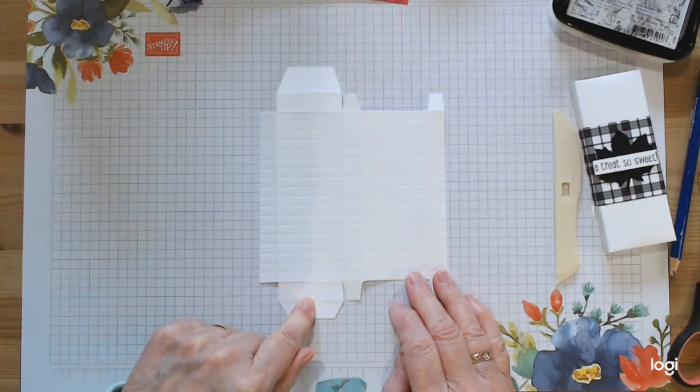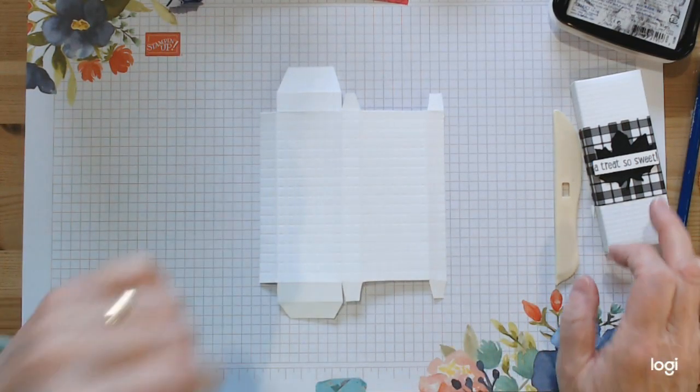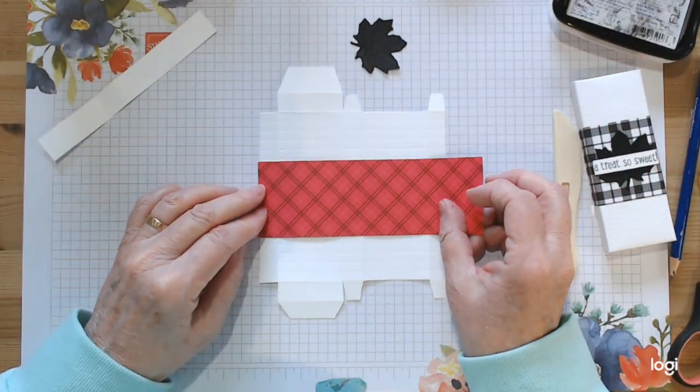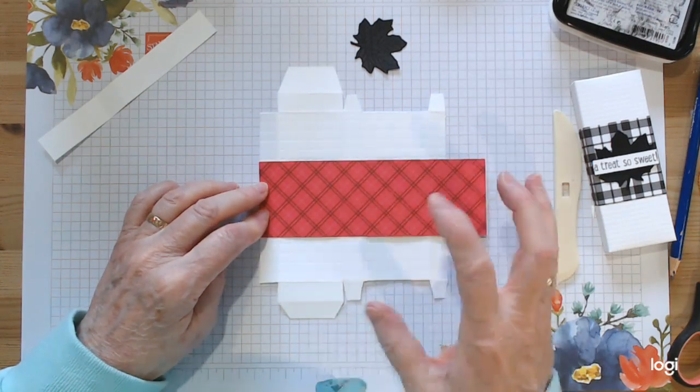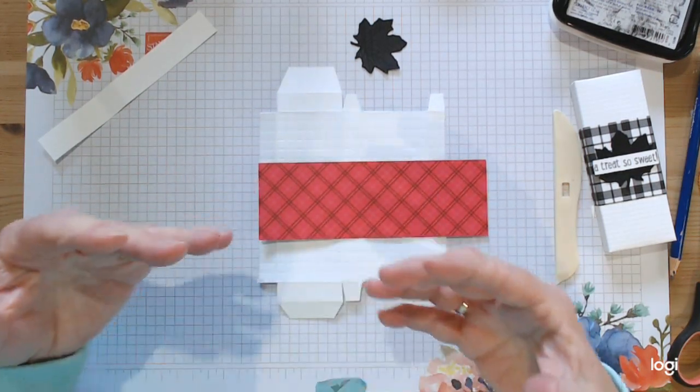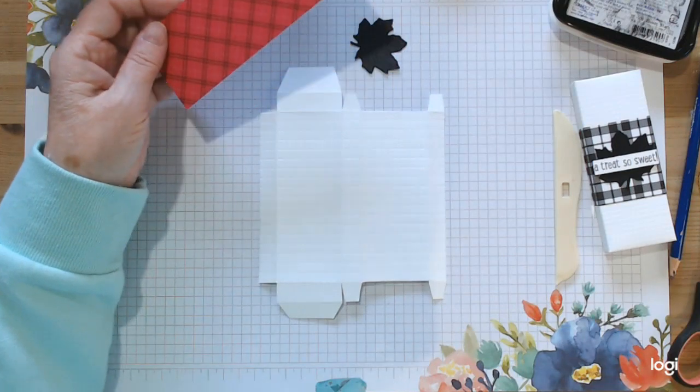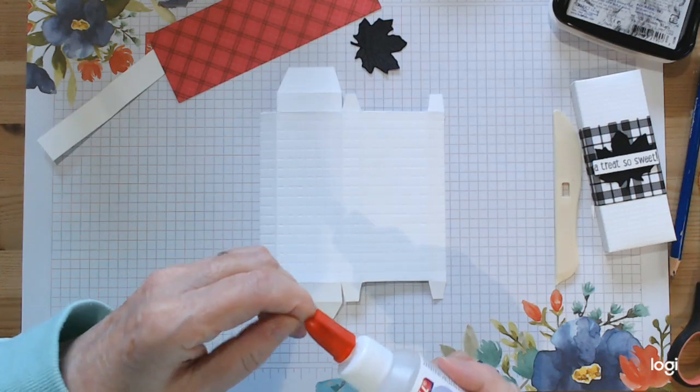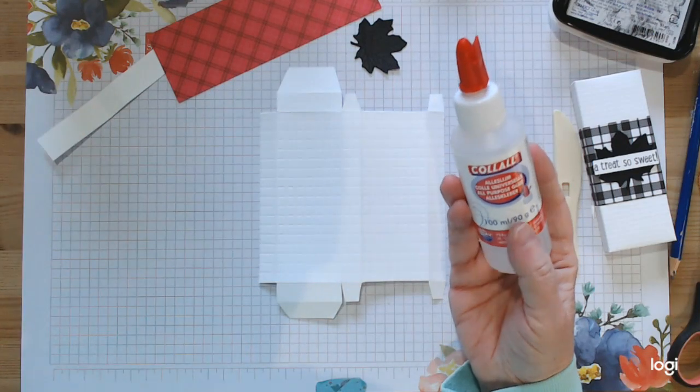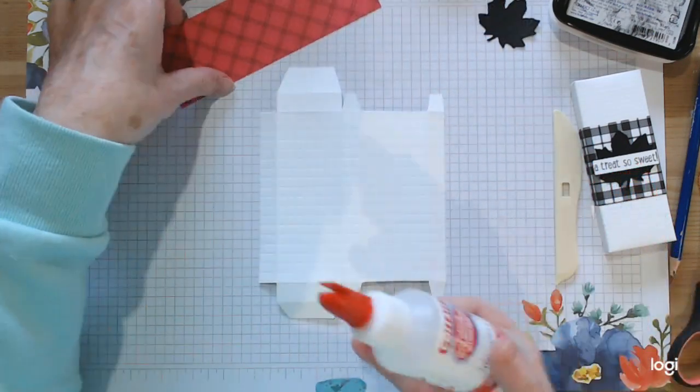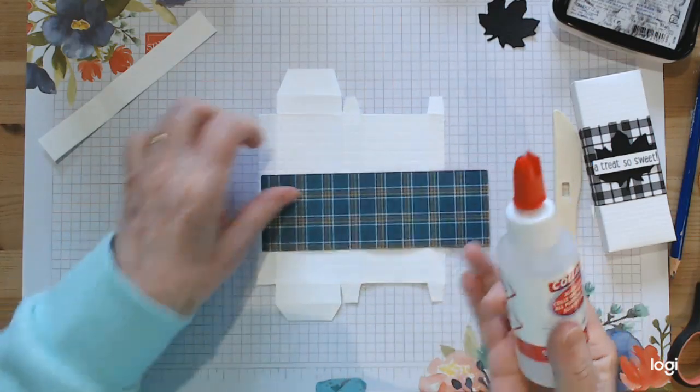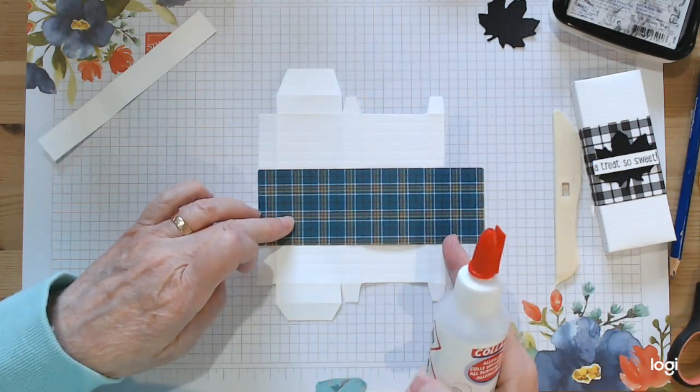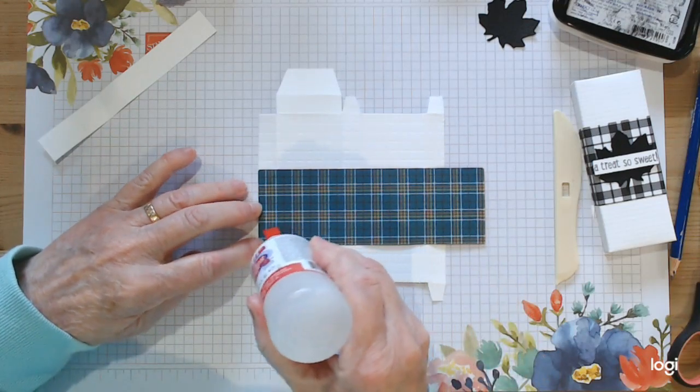So you should be left with this shape. This is your top where the chocolate's going to go in. This is going to be sealed at the bottom. Before we do that we want to add our paper, and the best way I found to do that is to put it on before you make up your box. You're going to need to add some liquid glue, preferably this one.